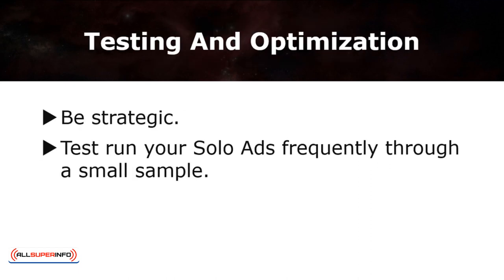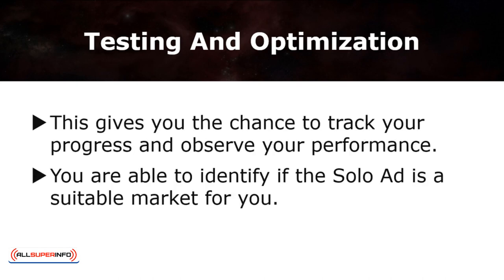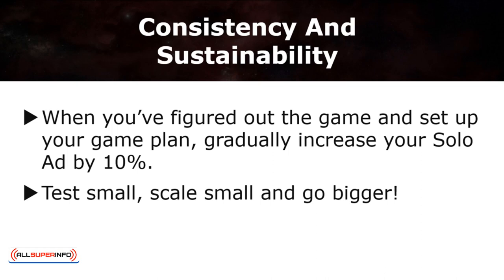Testing and optimization: always be strategic in your solo ad journey and test run your solo ads frequently through a small sample. Test small, scale small, and go bigger. For instance, when you've found a mailing list that suits your market and the sample size is 100,000, for the first run you should take only 10% of the solo ad block — that means 10,000 from the entire block. This gives you the chance to track your progress and observe your performance. You can identify if the solo ad is in fact the suitable market for you. If it didn't work out as planned, devise a new plan and improve. Most importantly, you are not taking a risk you can't afford, as you are scaling it small. Once you've figured out your game plan, gradually increase your solo ad by 10%. Don't scale it up drastically. Consistency and sustainability are always the key.